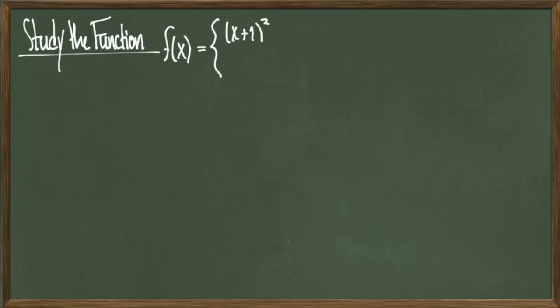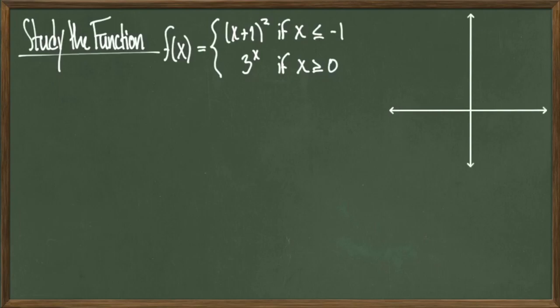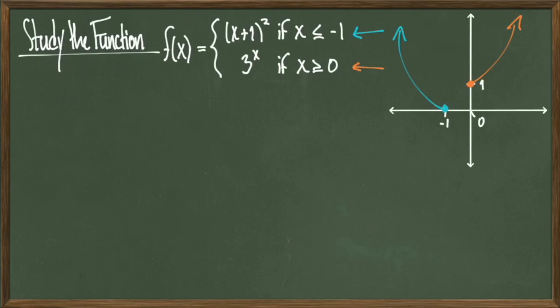In our next example, we're given the piecewise function f of x equals x plus one squared if x is less than or equal to negative one, or f of x equals three to the x if x is greater than or equal to zero. Drawing this on the graph, I have the parabola stopping at negative one, and I have my exponential function starting at x equals zero. Noticing that I have a gap in the middle, we'll talk about how to identify how big these gaps are and how to describe them. Just by looking at the graph, you should be able to convince yourself that there is a large portion of the number line in which the function is not defined.